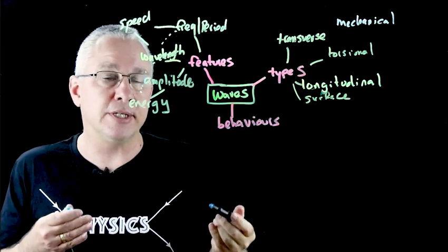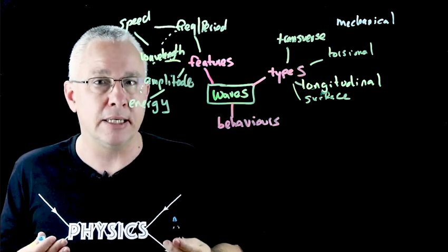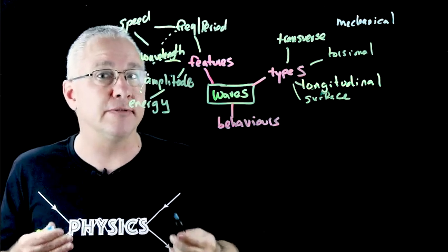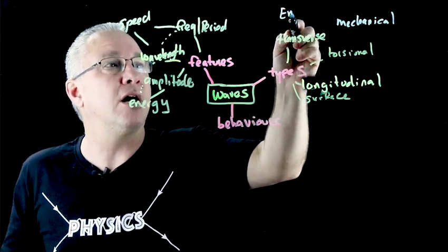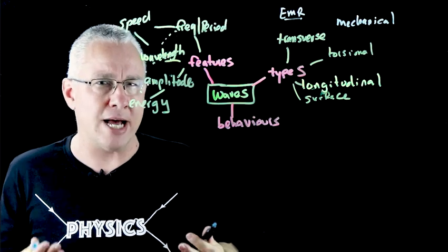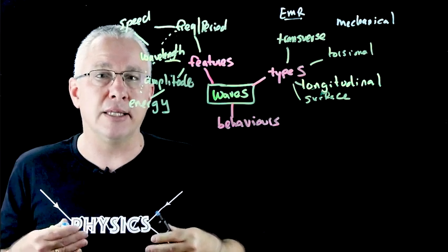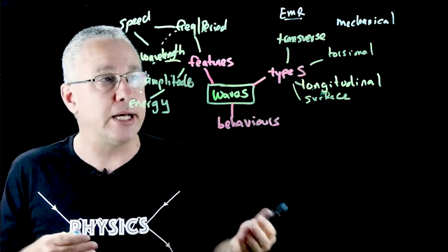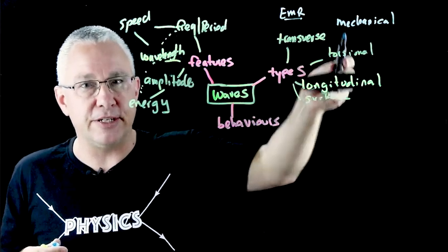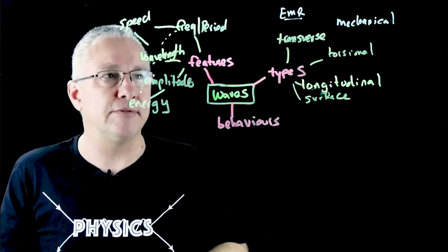Now up until the end of the 19th century, the understanding was that waves always require a medium, but we now know that's not correct with the advent of Maxwell's understanding of electromagnetism. And so what we'll also have is the idea of electromagnetic radiation, which is a transverse wave but it's not mechanical. That is, it does not need a medium to travel through. Now in this case, the wave is actually a fluctuating electric and magnetic field. But now we have a differentiation between mechanical waves and non-mechanical waves, specifically the electromagnetic radiation.